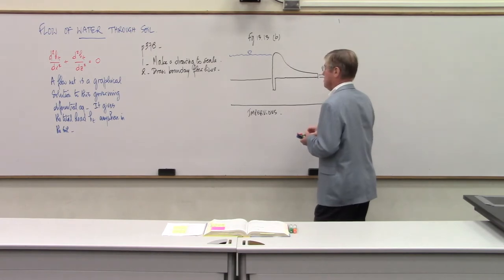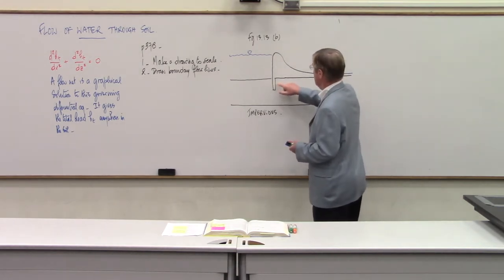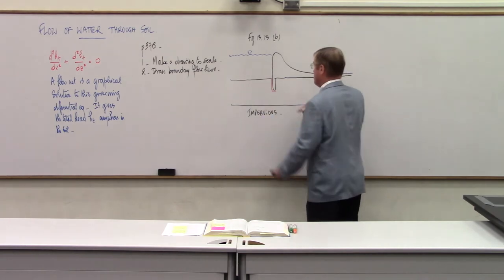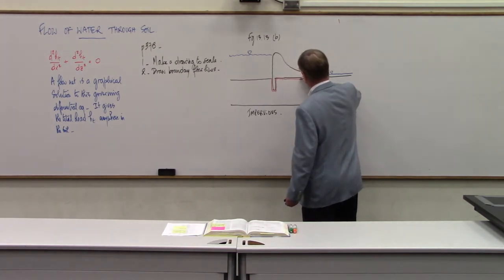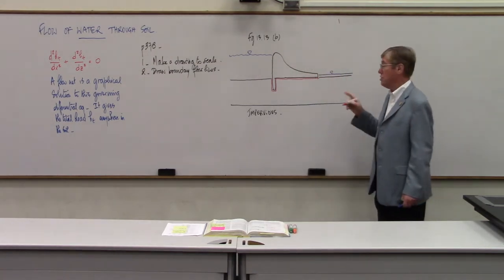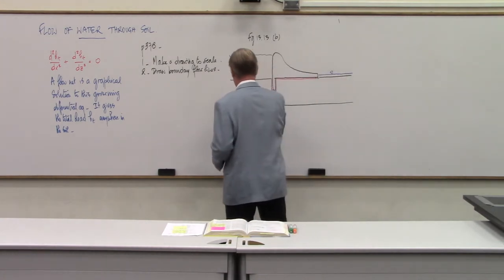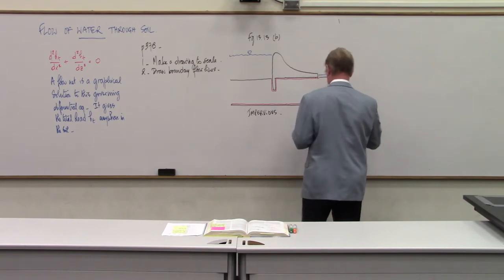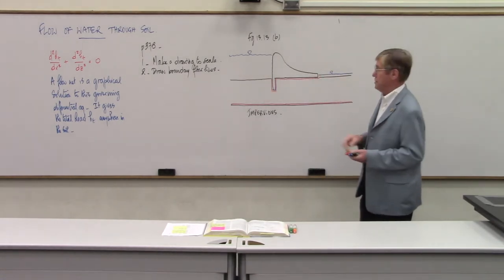The boundary flow lines define the limits within which all water flow takes place. The water cannot go through the concrete, so one boundary flow line goes down, takes a sharp corner at the bottom of the spillway cutoff wall, and comes back up on the other side. The other boundary flow line runs along the bottom of the impervious layer. All flow occurs between these two boundary flow lines.